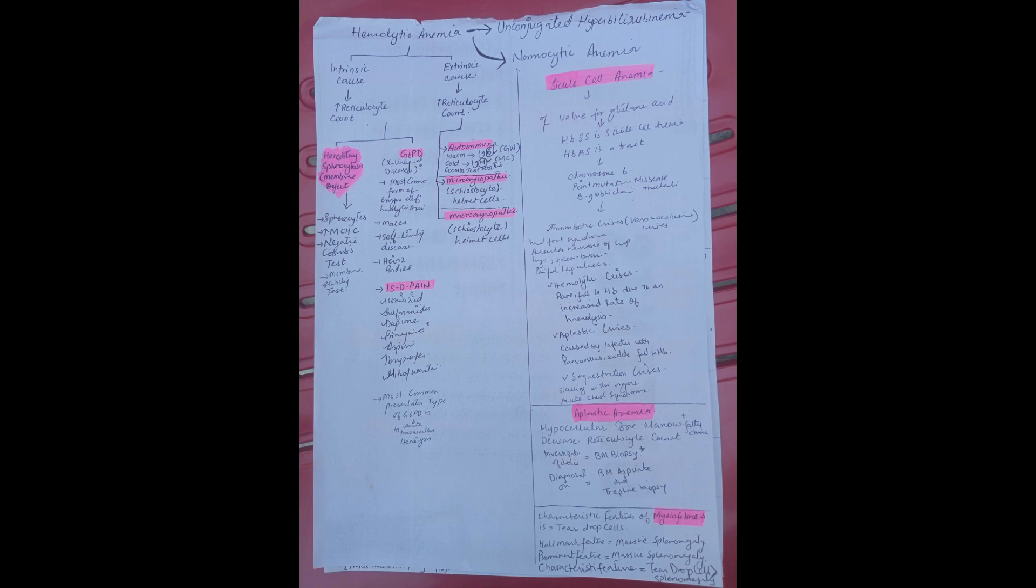In warm, IgG is seen, and in cold, IgM antibodies are present. Coombs test is positive in autoimmune hemolytic anemias.